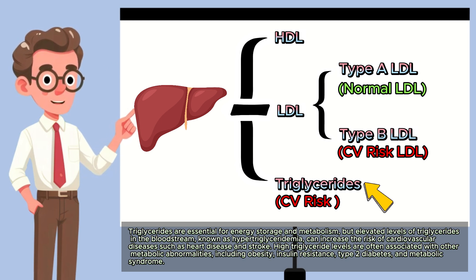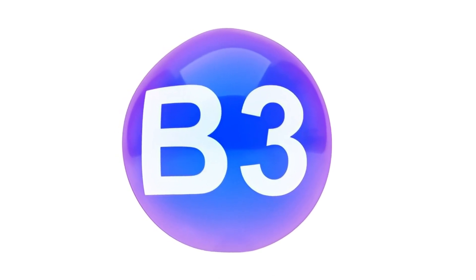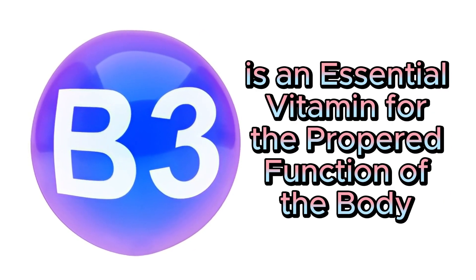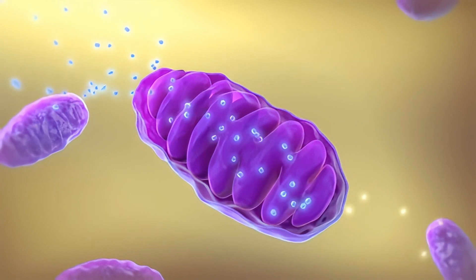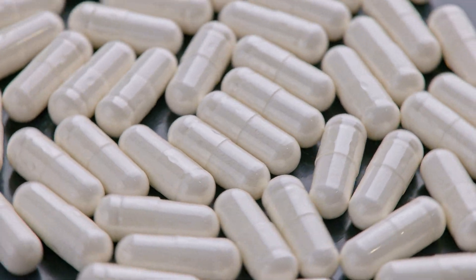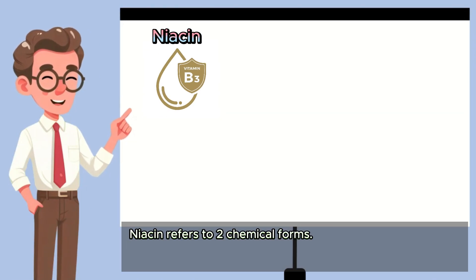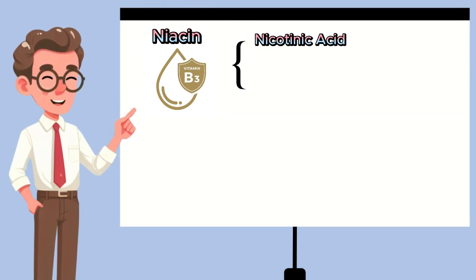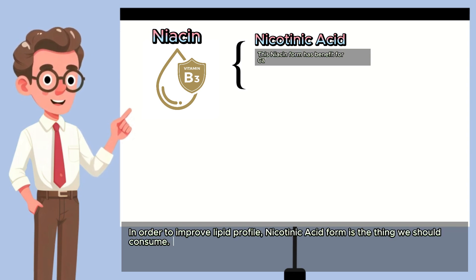After you know about the common lipid profiles in the blood test, it's time to go to the next chapter. Chapter 2: What Niacin Is. Niacin, also known as vitamin B3, is an essential vitamin for the proper function of the body. It plays a role in energy metabolism and cell signaling. Niacin is found in various foods, and it's also available as a dietary supplement. Niacin refers to two chemical forms. First, nicotinic acid — in order to improve lipid profile, the nicotinic acid form is what we should consume. This form is usually called niacin.